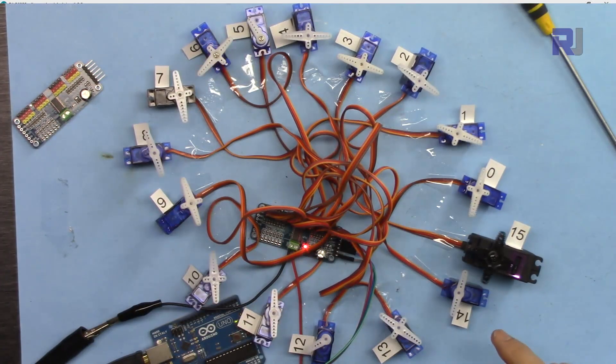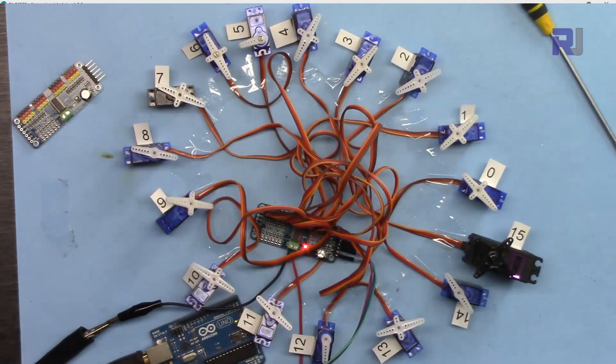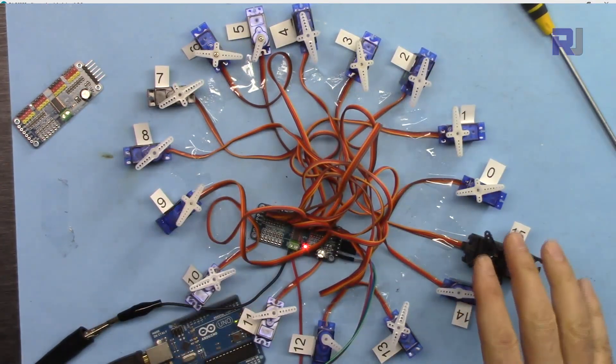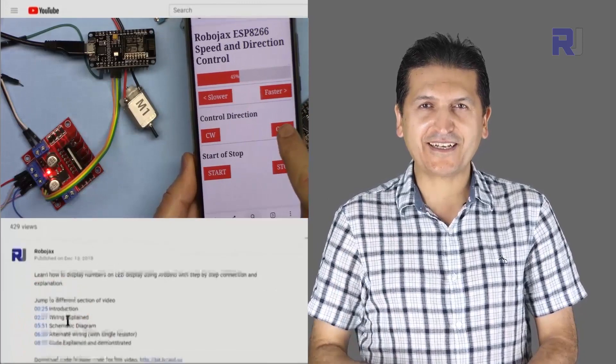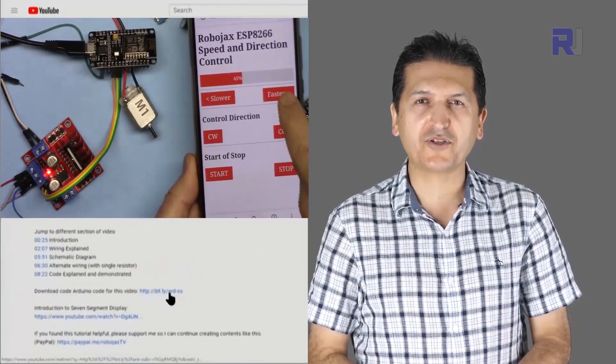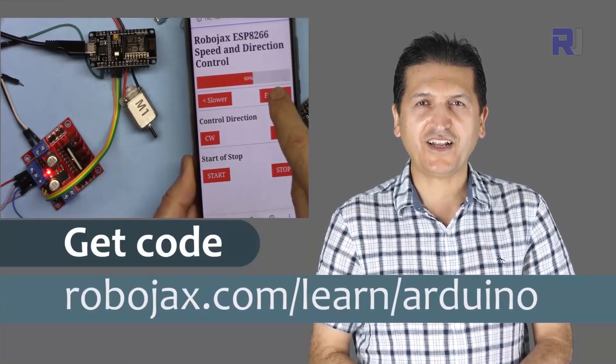Also I have a project that you can control 16 servo motors with different types of codes. You can get the code for this by clicking at the link below the video in the description which will take you to robojax.com/learn/Arduino.